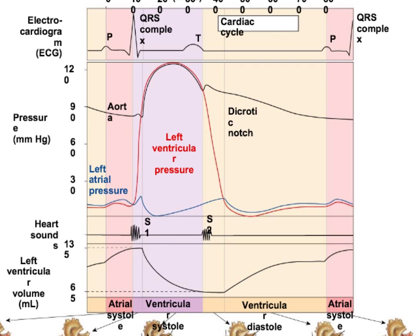Back to the EKG: the QRS complex is the depolarization of the ventricles. From S to T, you have contraction of the ventricles. Looking at the pressure diagram, after the AV valves close, you get isovolumic contraction — no volume change but a jump in pressure — to build up enough pressure to open the aortic valve and allow blood to drive into the aorta.